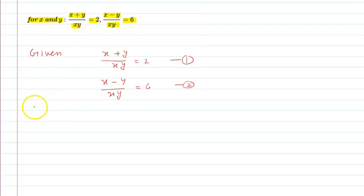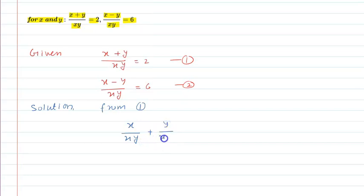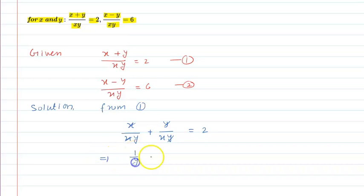Let us see the solution part of this question. From equation 1, we separate out the numerator over the denominator: x upon xy plus y upon xy is equal to 2. The y cancels with y and x cancels with x, which implies that 1 upon y plus 1 upon x is equal to 2. This is equation number 3.